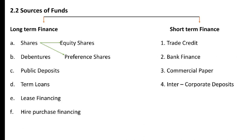Now we are discussing the sources of funds. The sources of funds have two types: long-term finance and short-term finance. Long-term finance includes shares, debentures, public deposits, term loans, lease financing, and hire purchase financing.